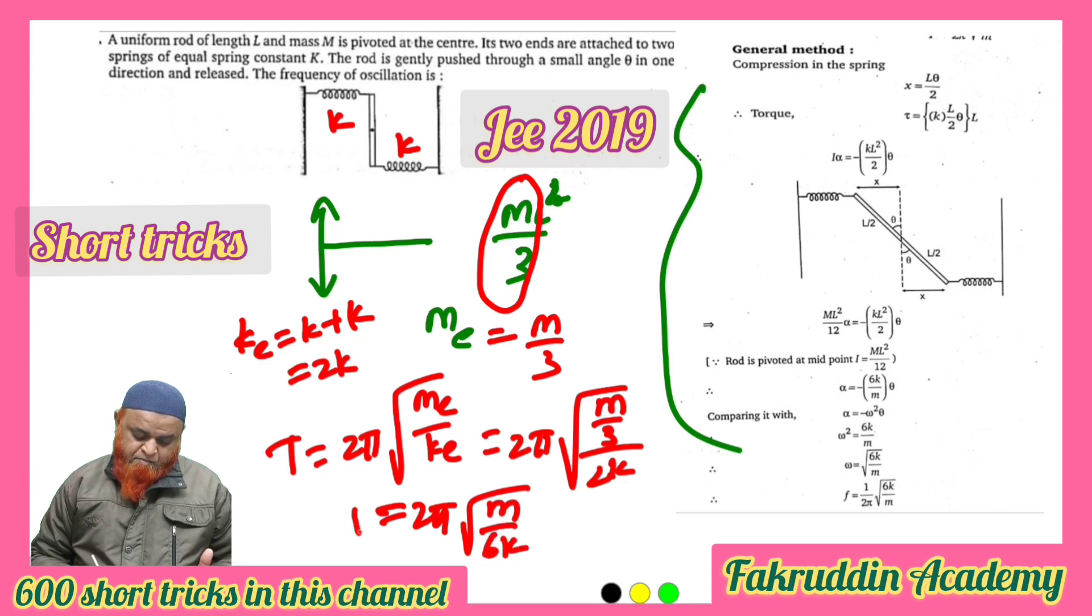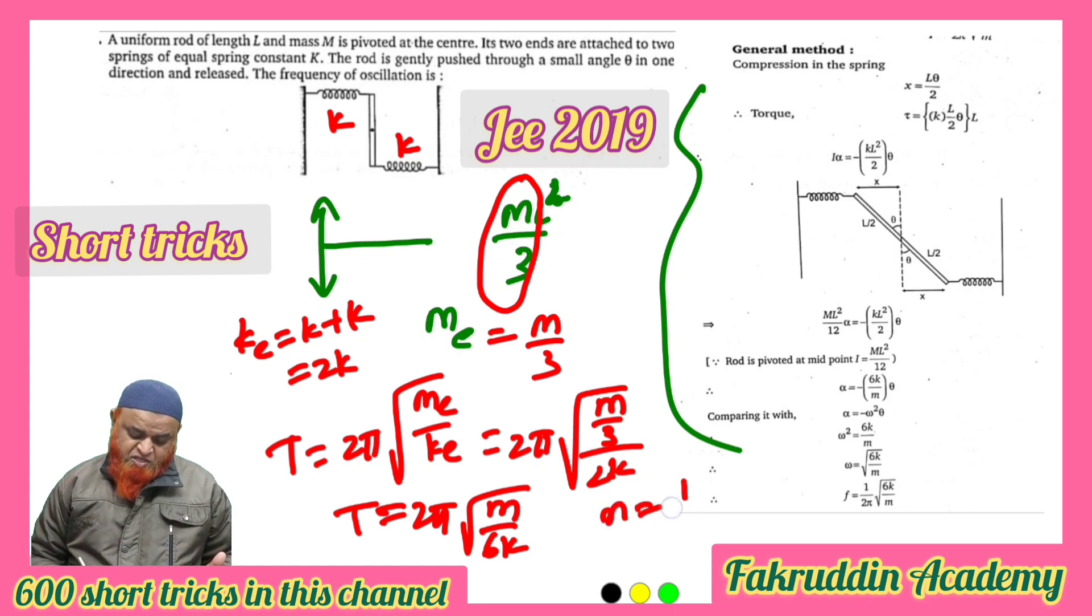That's it, your work is done perfectly. Root of m by 6k. So this is time period, but it's asking us to find out the frequency. Just make the reciprocal of time period, then directly you are getting this answer.